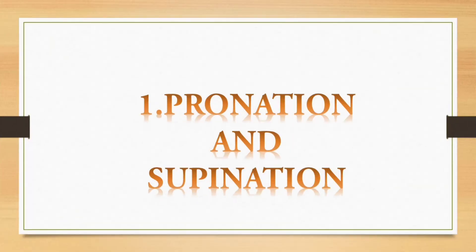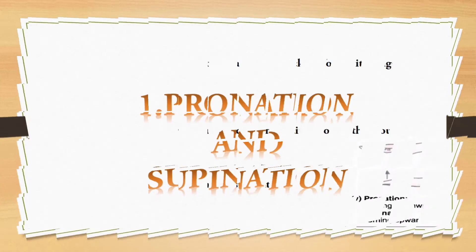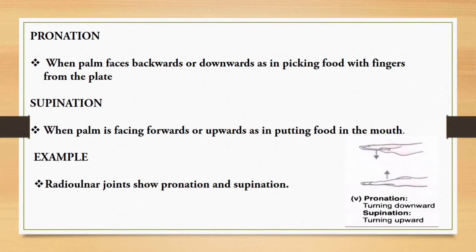First question is pronation and supination. Pronation is when the palm faces backwards or downwards, as in picking food with fingers from the plate. Supination is when the palm is facing forwards or upwards, as in putting food in the mouth. Example: radio-ulnar joints show pronation and supination. After writing this, you can draw the diagram given here.